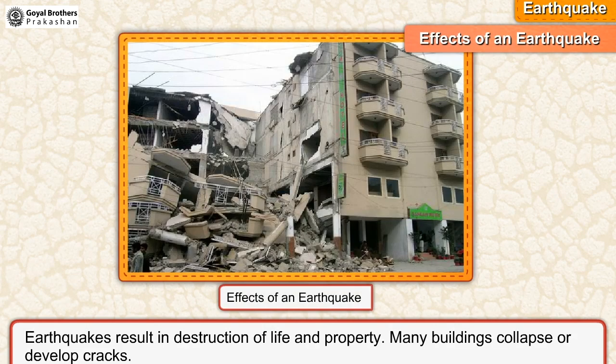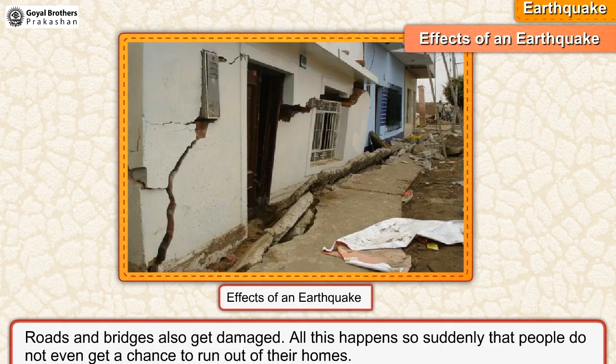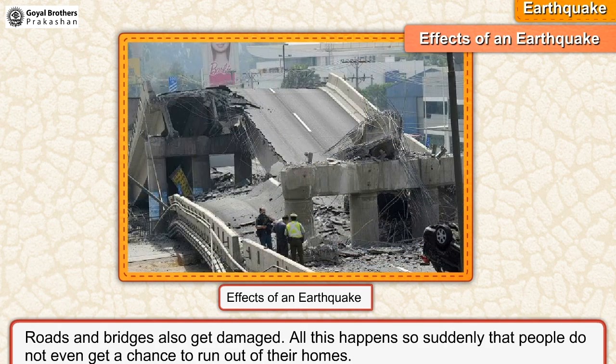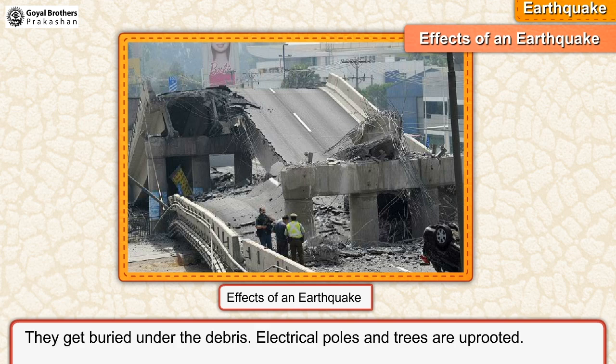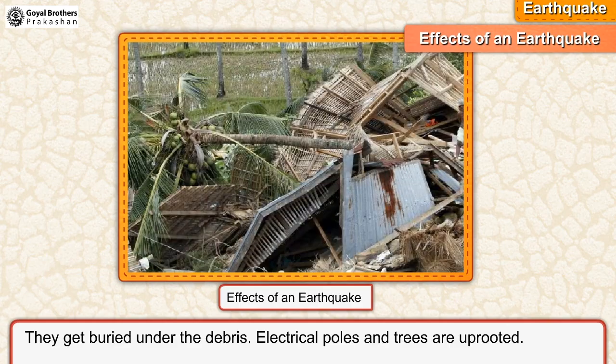Earthquakes result in destruction of life and property. Many buildings collapse or develop cracks. Roads and bridges also get damaged. All this happens so suddenly that people do not even get a chance to run out of their homes. They get buried under the debris. Electrical poles and trees are uprooted.